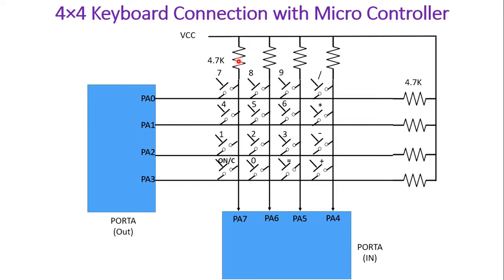We have connected VCC with a 4.7 kilo-ohm pull-up resistance, and from that the wire is connected to PA7. The same way the second column is connected to PA6 via this resistance. PA0 to PA3 are defined as output ports. First we are going to send 0000 on PA0 to PA3, and PA4 to PA7 will read the data since they are defined as inputs. Due to VCC, all of PA7, PA6, PA5, and PA4 will read 1.